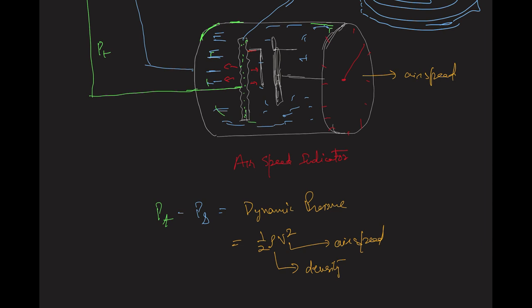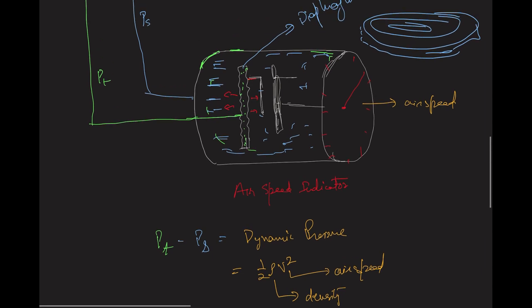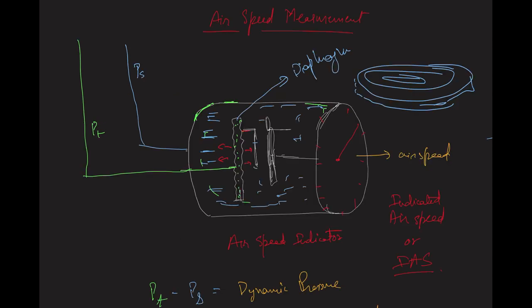The airspeed indicated by this type of airspeed indicator is known as indicated airspeed, or IAS. I hope this video explains how airspeed is measured, how the airspeed indicator works, and how the pitot static tube contributes to the measurement of airspeed. Thank you.